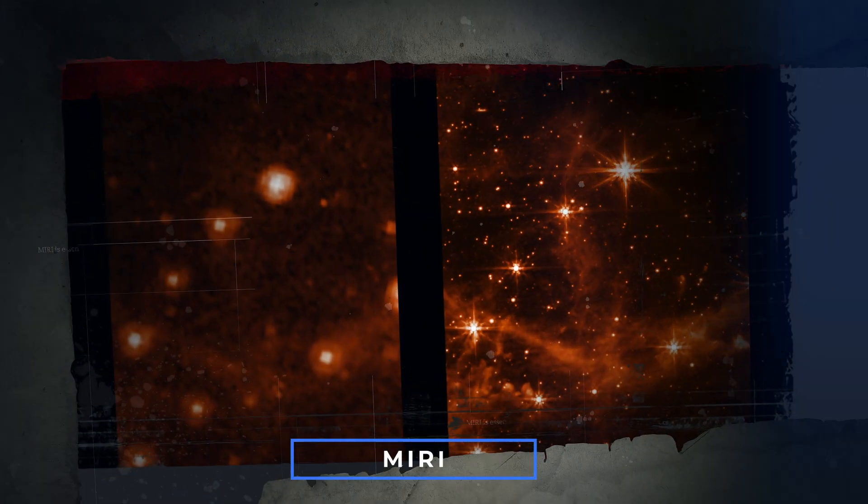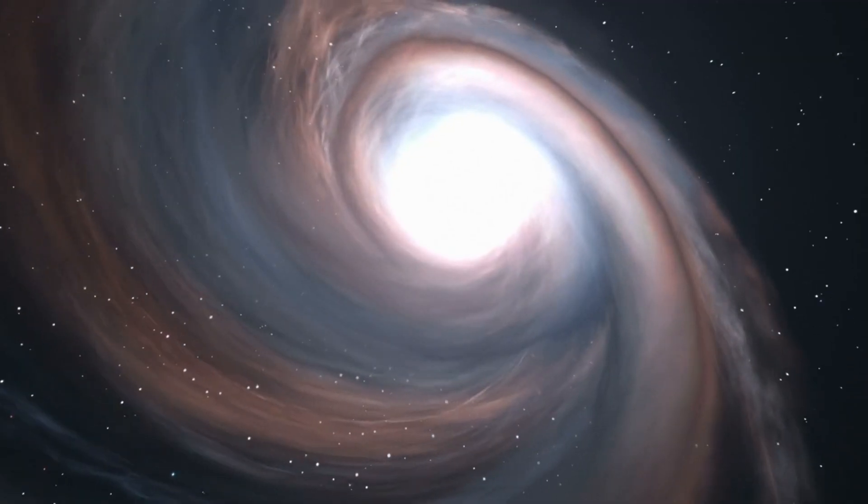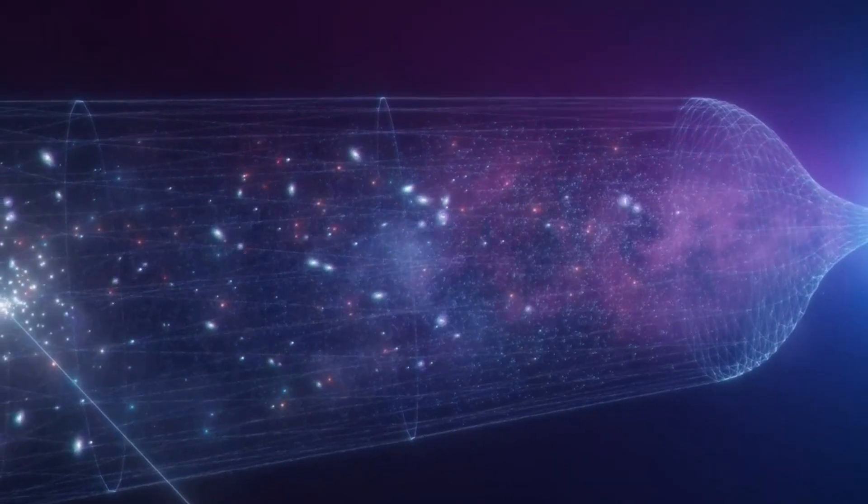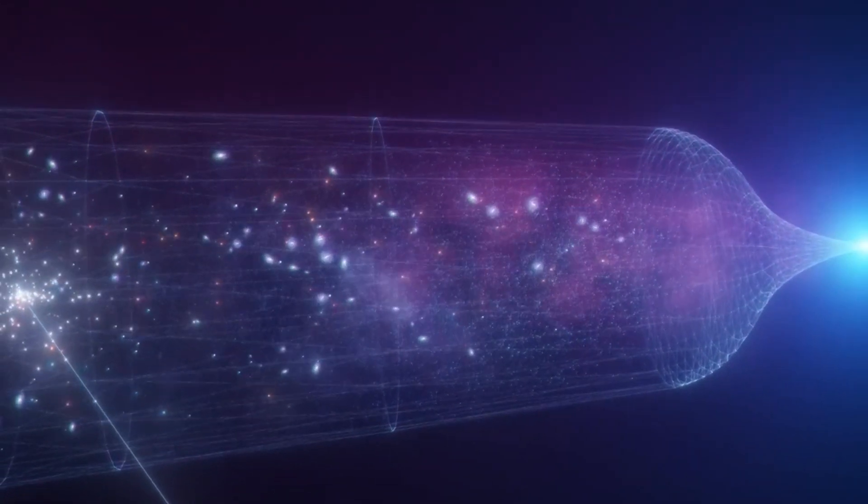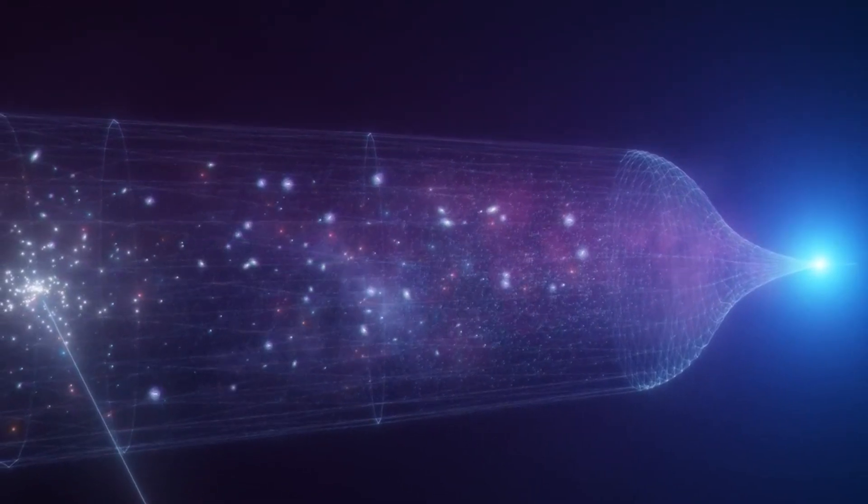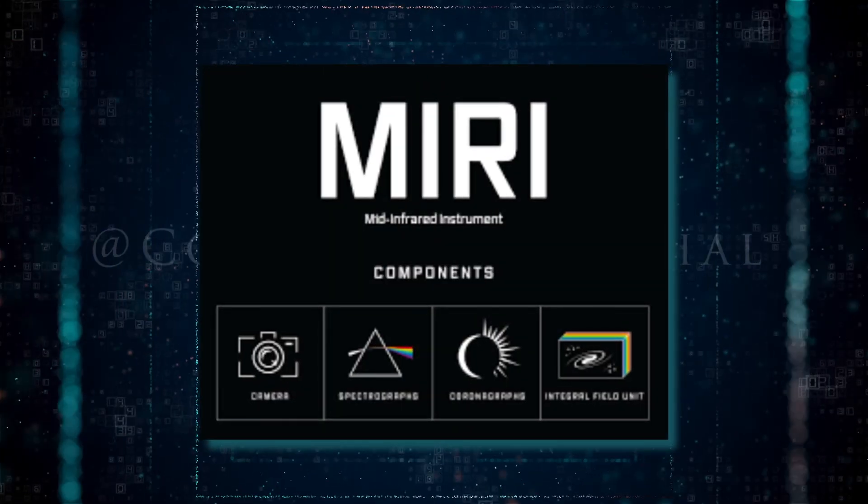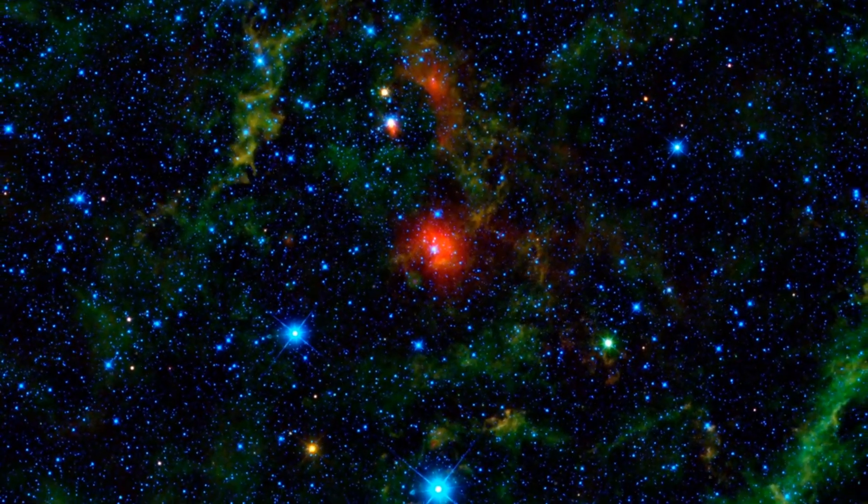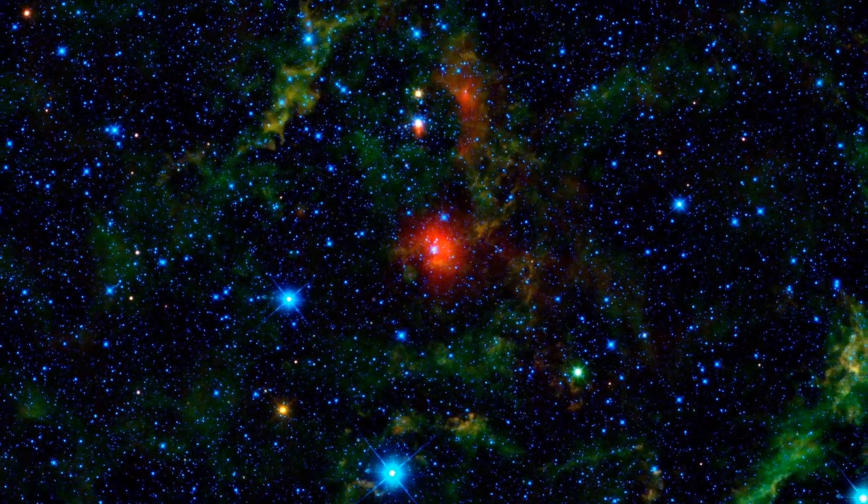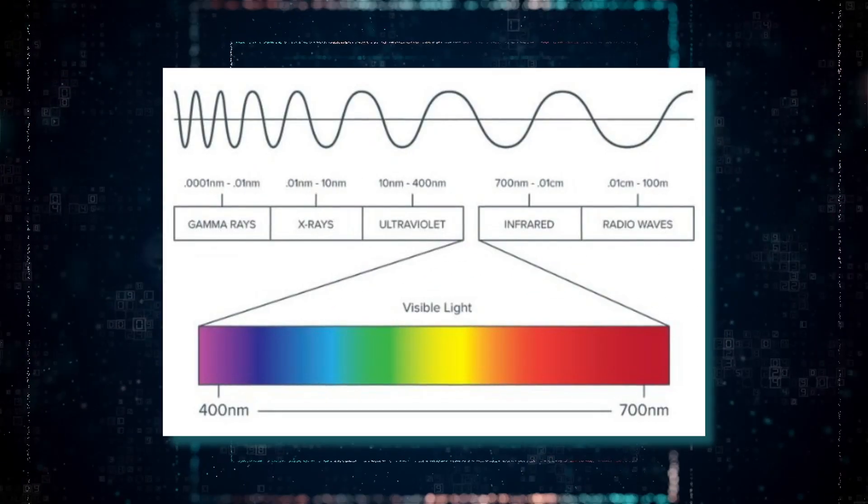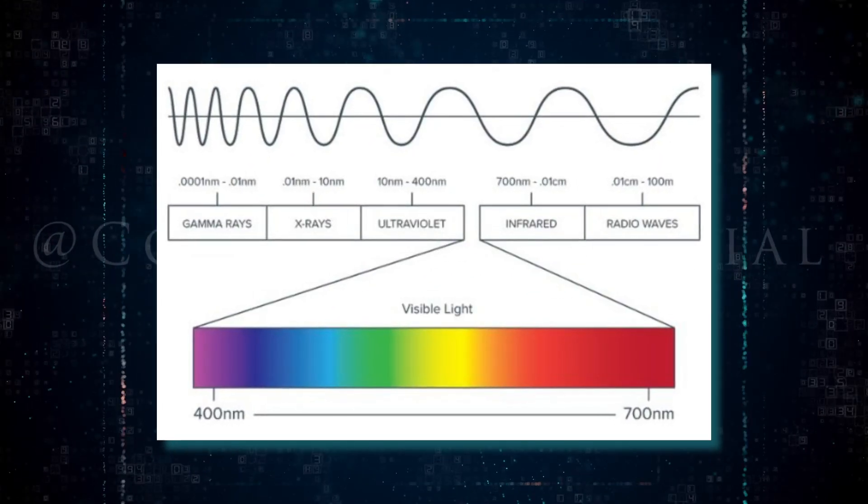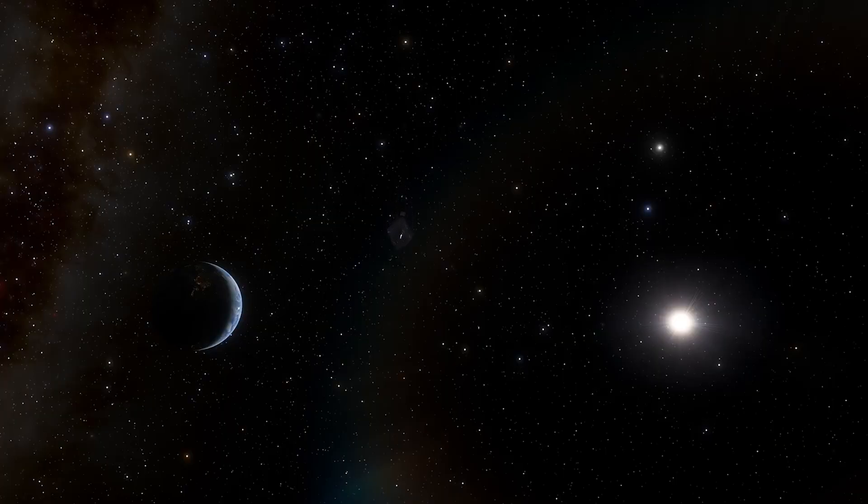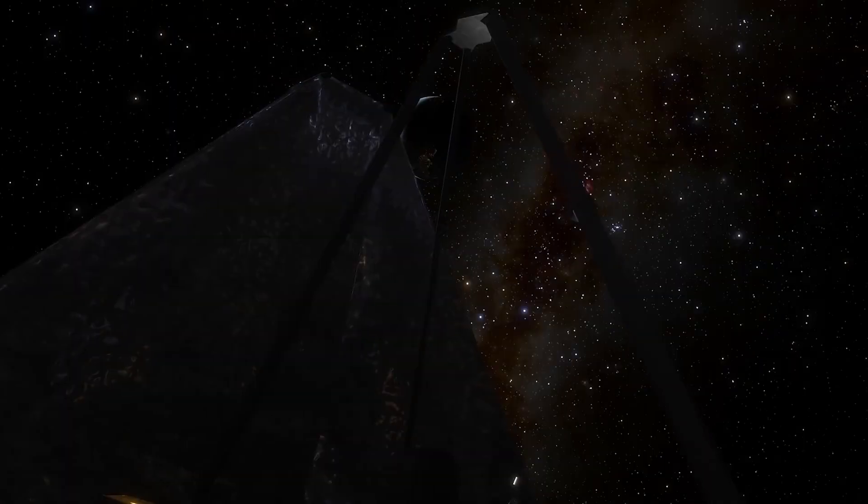MIRI is essential for JWST. Without it, you can't see the cooler phenomena in the universe. You can't peer back as into the earlier stages of star formation as you would like. So MIRI is an incredibly significant and important instrument. The images contain far more detailed and has ever been done before. When we look at it in new wavelengths of light, we find things that we hadn't expected to see. And that's a really important part of how you discover things about the universe.